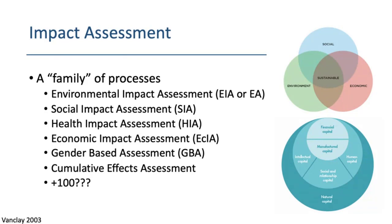The dominant variation would be environmental impact assessment. But early EIAs were critiqued for focusing predominantly on the biophysical stuff. People started to think more about sustainability and expand the definition of environment. That's where you get those Venn diagrams — sustainability is not just about the biophysical environment, but also the social and economic environment. Different sub-disciplines of impact assessment began to emerge to capture these issues.